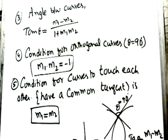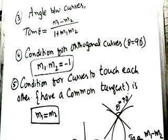To revise: angle between curves is tan θ = (m₁ − m₂)/(1 + m₁m₂). Condition for orthogonal curves (angle = 90°): m₁ × m₂ = −1. Condition for curves to touch each other or have a common tangent: m₁ = m₂.